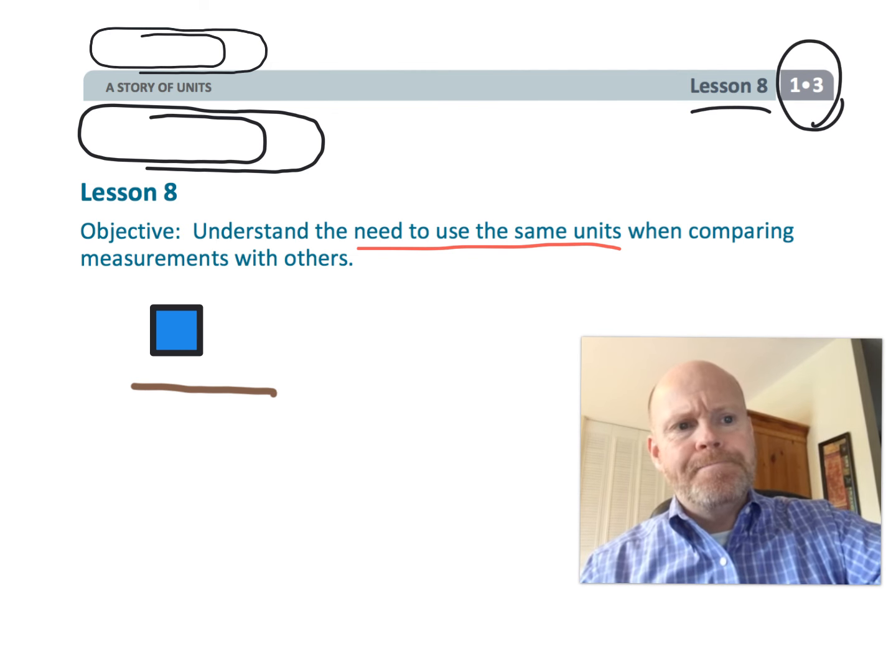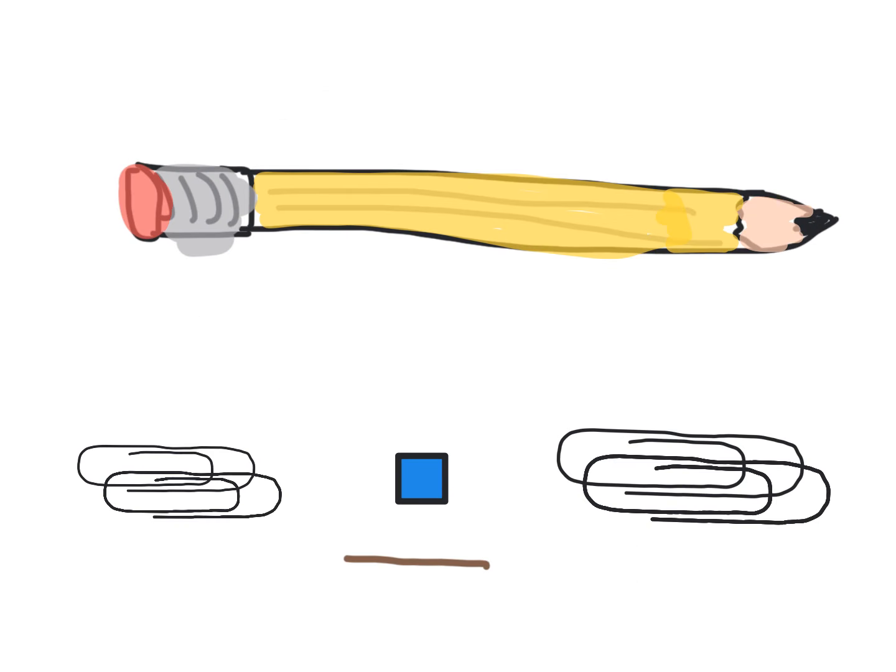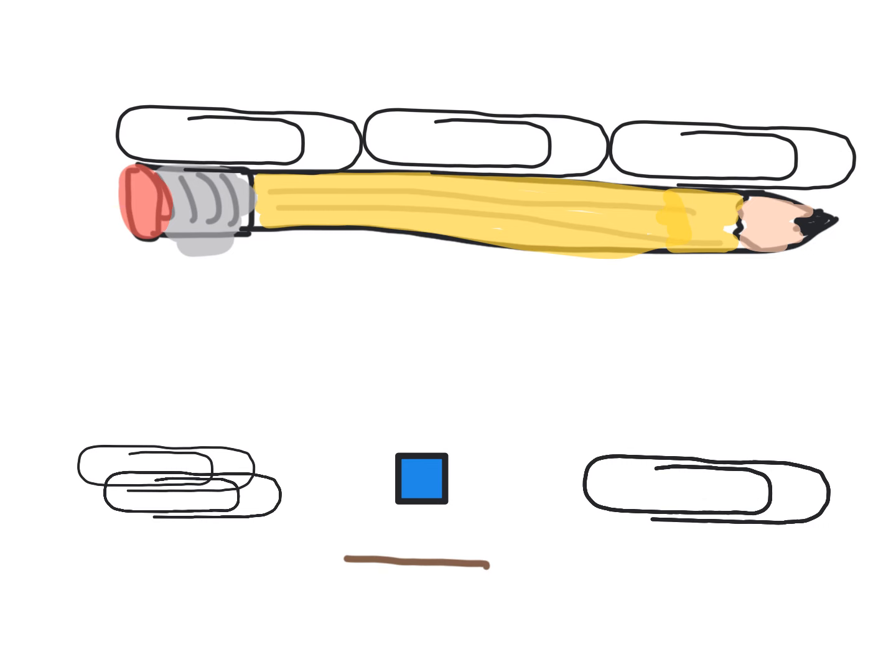So let's get an example going here. Just as an example of what we're talking about in terms of the need for students to be using the same units of measurement when comparing each other, we have the same pencil here, but one student might be using large paper clips, in which case that student would get, oh it's about three paper clips long, while another student might come up with a different measurement simply because she uses different sized paper clips. Oh, four paper clips.